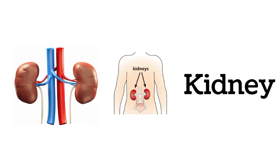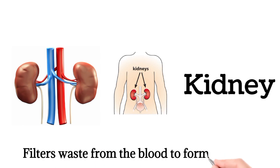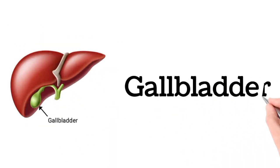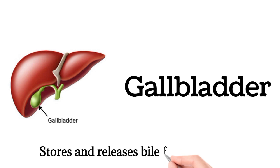Kidney. The kidney filters waste from the blood to form urine. Gallbladder. The gallbladder stores and releases bile for digestion.